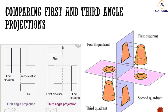Comparing first and third angle projections: in third angle projection, the plan is at the top, the front is below the plan, and the end is beside the front. In all projections the end is always beside the front and the plan stands alone. In first angle projection, the plan is below, the front is above, and the end is on the opposite side — essentially the inverse of third angle.